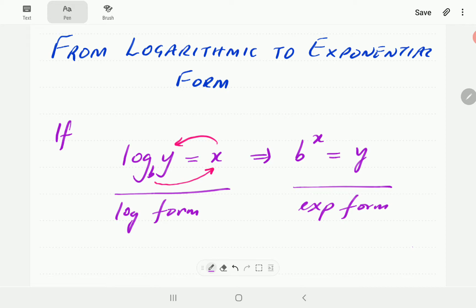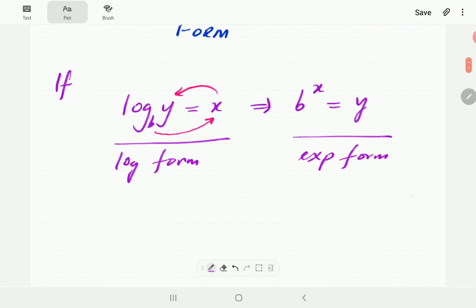And then the same equation, we can write it as b to the power of x is equal to y. That one is called the exponential form. These two are the two sides of the same coin, they are saying exactly the same thing. This side, we're saying it in exponential form. This side, we are saying it using logarithmic terms.